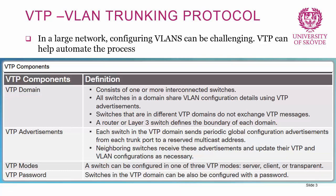Each switch in the VTP domain sends periodic global configuration advertisements from each trunk port to a reserved multicast address. Neighboring switches receive the advertisements and update their VTP and VLAN configurations as necessary. There are three different VTP modes: server, client, and transparent. The server mode is where we do the configuration or set the VLANs; clients listen. Transparent is a special mode we'll explore shortly. Switches in a VTP domain can and should be configured with a password to ensure VTP advertisements only come from trusted sources.